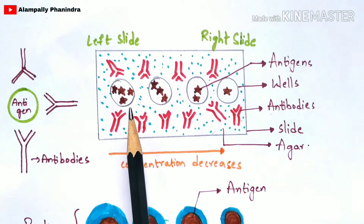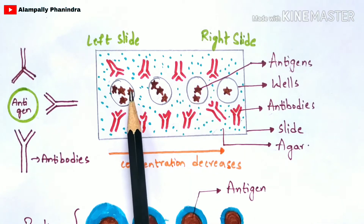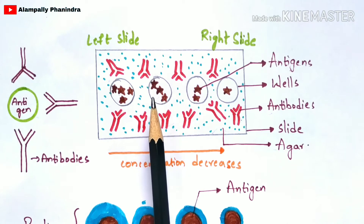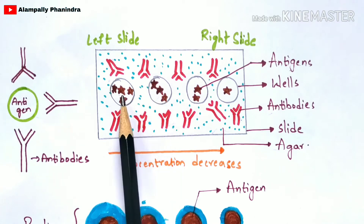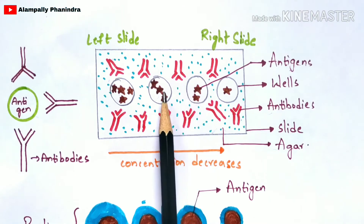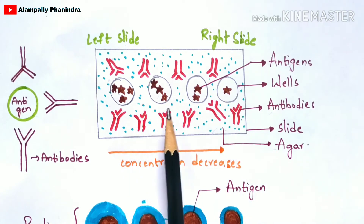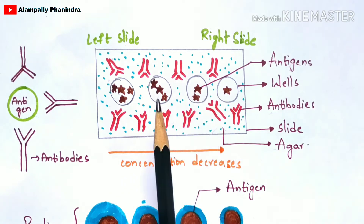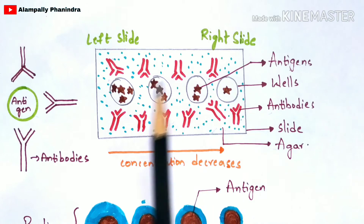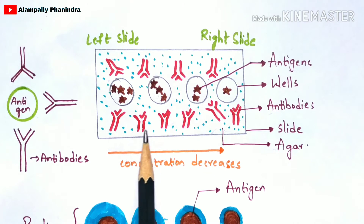In the first well, you are going to take a high concentration of antigens. The stars indicated here represent the amount of concentration of the antigens — four stars indicate high concentration. In the second well, three stars indicate slightly less concentration. In the third well, the concentration is a little lower than the second and first wells. In the fourth well, the concentration is the lowest of all. From the first well to the last well, the concentration of antigen gradually decreases.